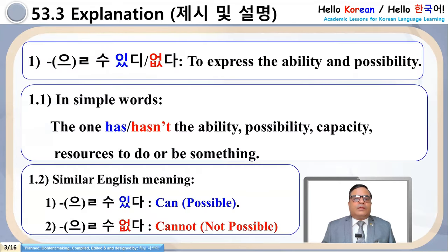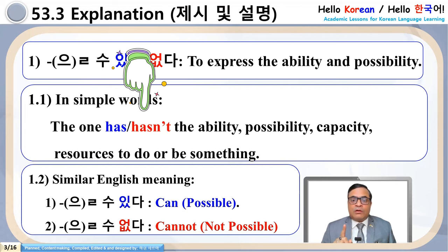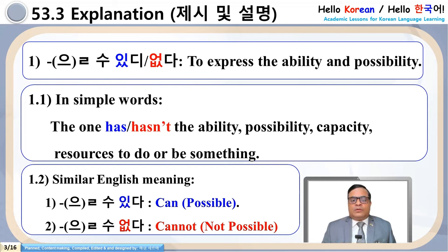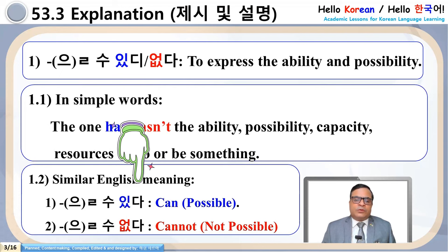Let's see the grammar explanation. Ulsu Itta or Akta is used to express ability and possibility. To understand in simple words: 1.1 — one has or has not the ability, possibility, capacity, or resources to do or be something. 1.2 — similar English meanings: Ulsu Itta is similar to 'can' — yes, that is possible. And Ulsu Akta is similar to 'cannot' — meaning 'not possible.' So now the grammar meaning is clear.